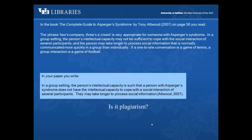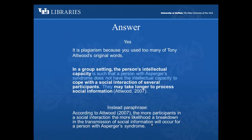'If a one-to-one conversation is a game of tennis, a group interaction is a game of football.' In your paper, you write: 'In a group setting, the person's intellectual capacity is such that a person with Asperger's syndrome does not have the intellectual capacity to cope with the social interaction of several participants. They may take longer to process social information.' Is it plagiarism? Yes, it is plagiarism, because you used too many of Tony Atwood's original words. Instead, paraphrase by saying: 'According to Atwood, the more participants in a social interaction, the more likelihood a breakdown in the transmission of social information will occur for a person with Asperger's syndrome.'